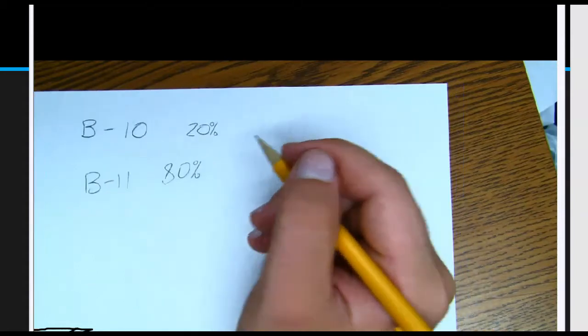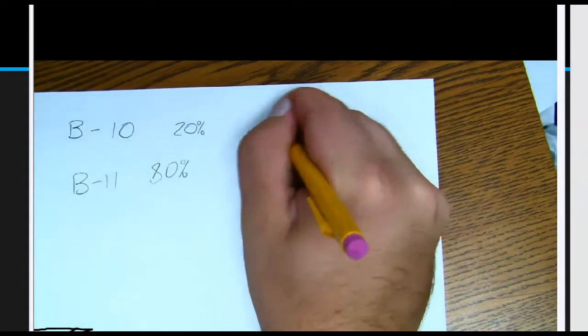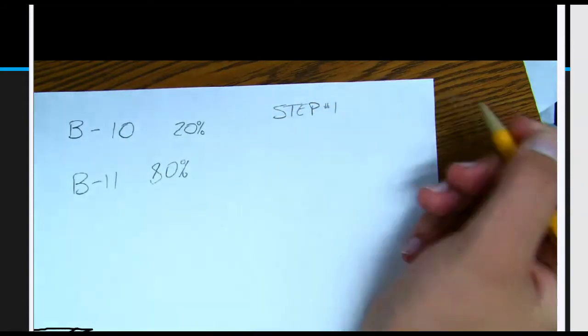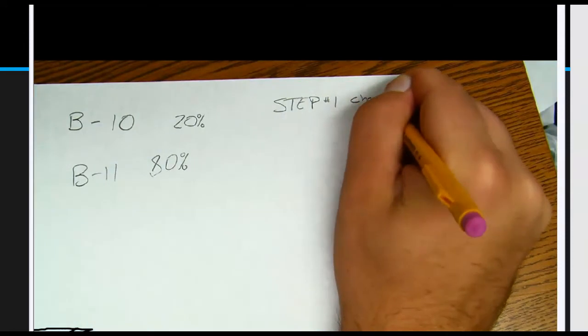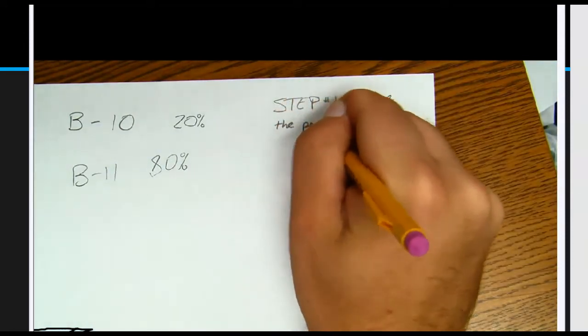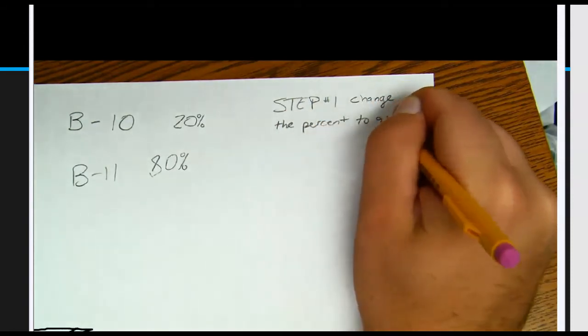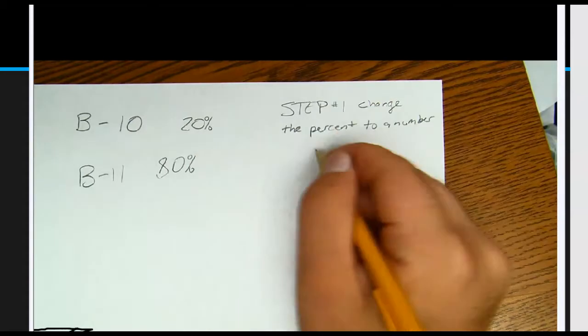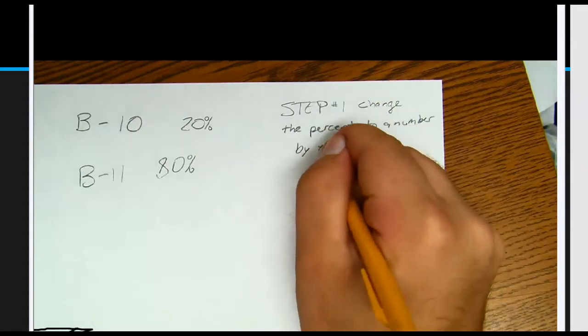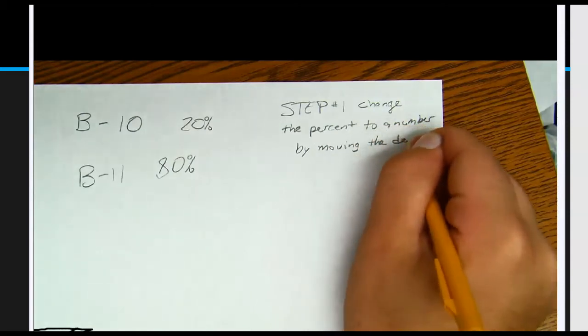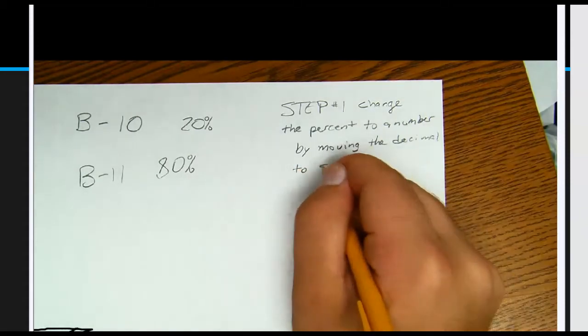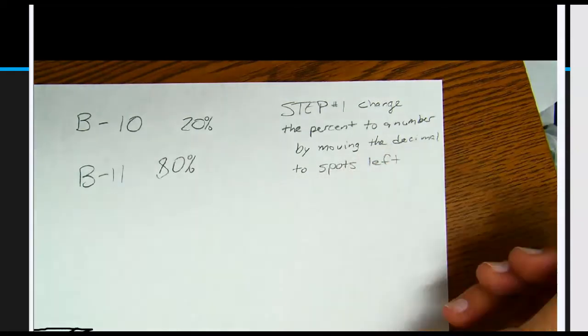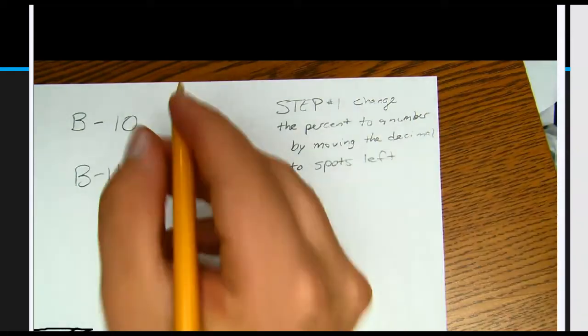So to solve these problems, there are four steps. Step number one: change the percent to a number by moving the decimal two spots left. Change the percent to a number by moving the decimal two spots left.